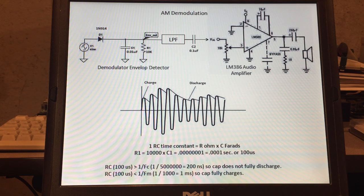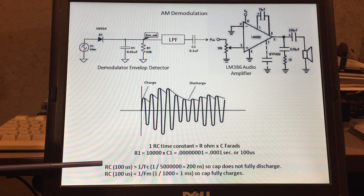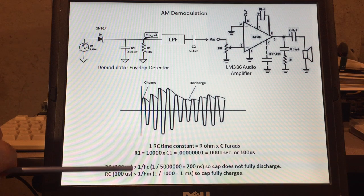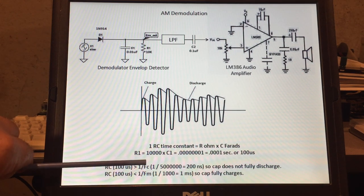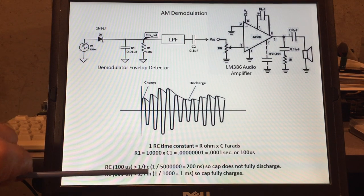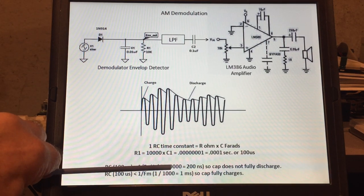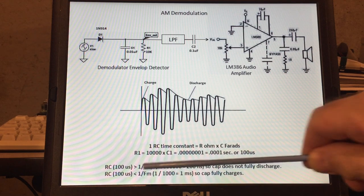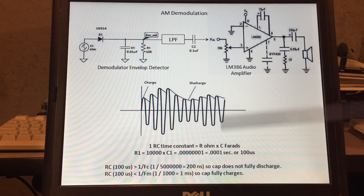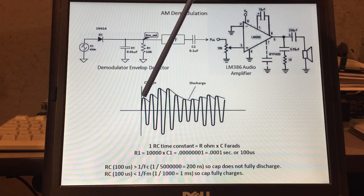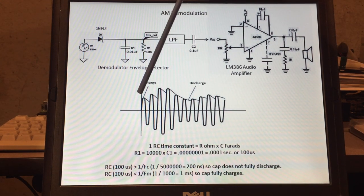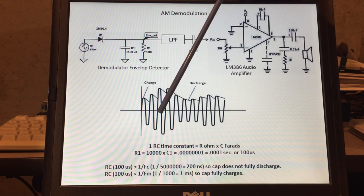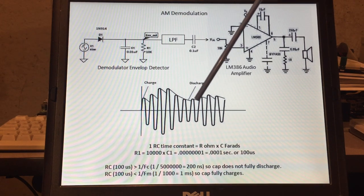So what are the requirements? Well if we take a look, the RC time constant should be greater than 1 over FC. 1 over FC in this case is 1 over 5 megahertz so it's 200 nanoseconds. And why does the capacitor have to be larger and the resistor to exceed 200 nanoseconds? Because we don't want the capacitor to be discharging all the way, so it needs to be larger than that time constant. If it discharges all the way this would drop all the way down and we'd no longer be able to capture this envelope.